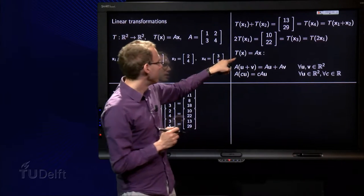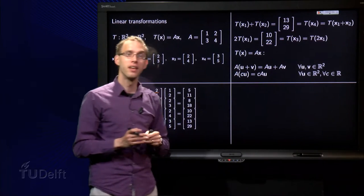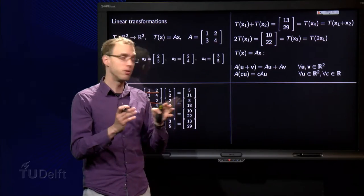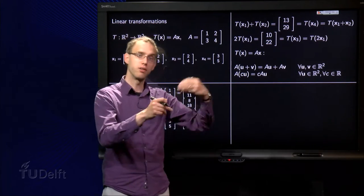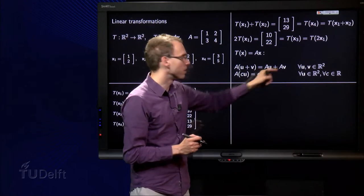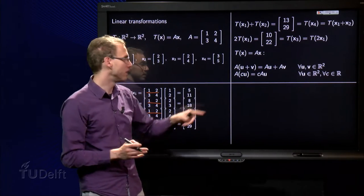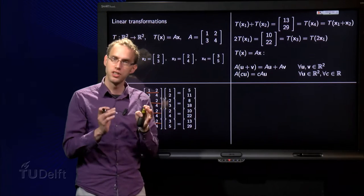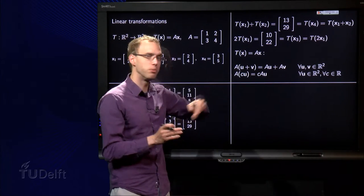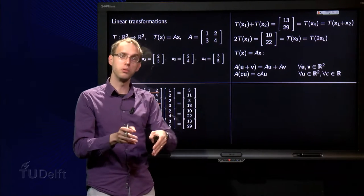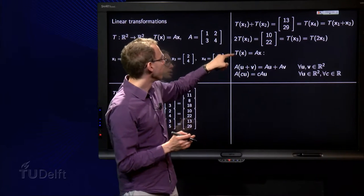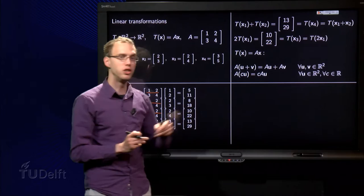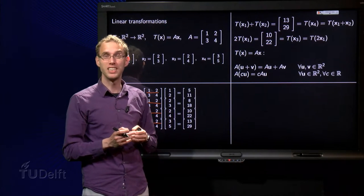And it's due to the fact that T of x is given by A times x. A matrix multiplication has the following two properties. You can compute A times u plus v in two ways. You can compute u plus v and then compute A times u plus v. Or you can compute A times u and A times v and then add the result that yields the same result. For scalars, A times c times u is the same as computing first A times u and then multiplying by c, or compute c times u and then compute A times c times u. So this property T of x1 plus T of x2 equals T of x1 plus x2 is in fact due to the fact how this matrix multiplication actually works.